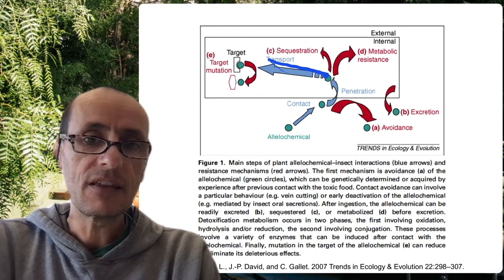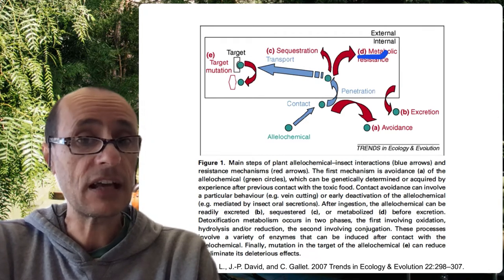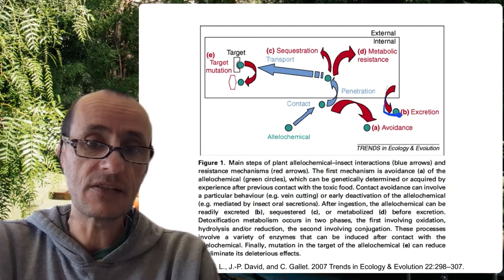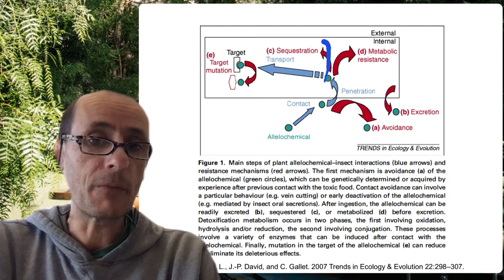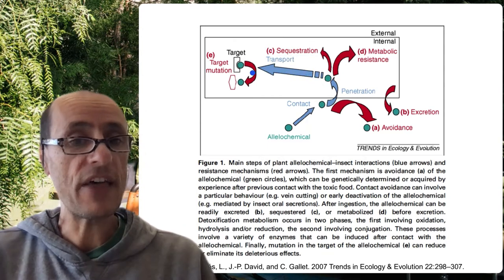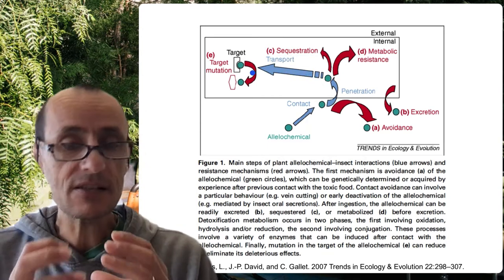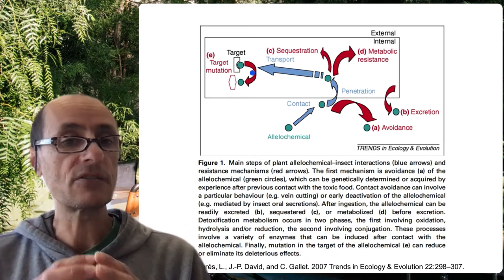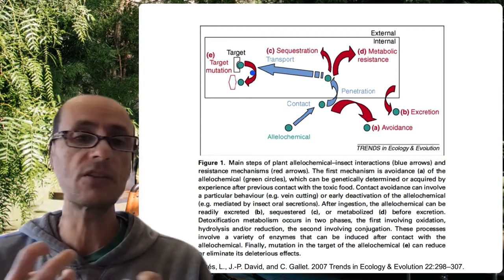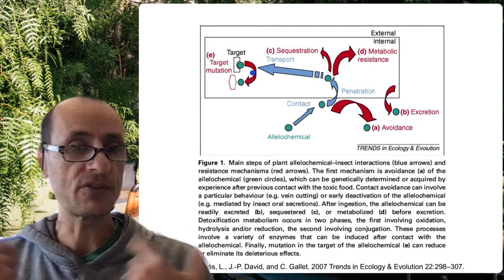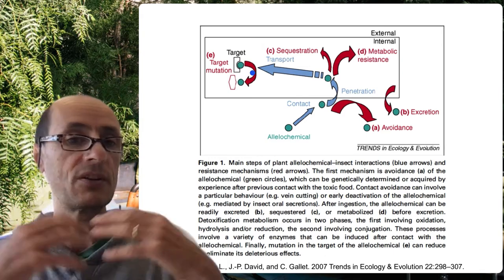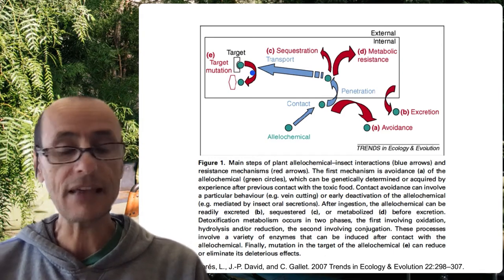One is that the metabolism of the insect can actually break down and excrete these compounds. The other is that they're packaged away into tissues that don't matter. And the third is that the reason why these plant secondary compounds are toxic in the first place is that they interfere with some key physiological process — whether it's neural signaling, a key digestive function, or cell replication.